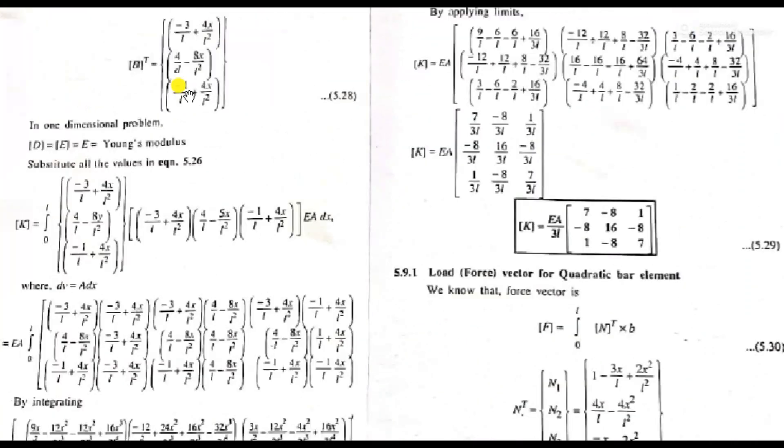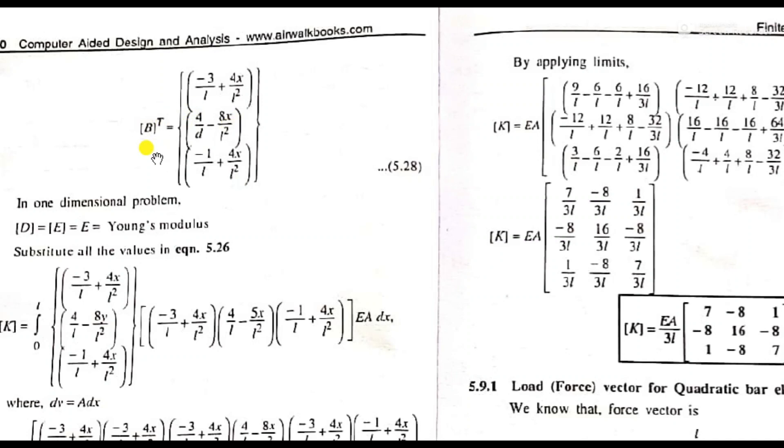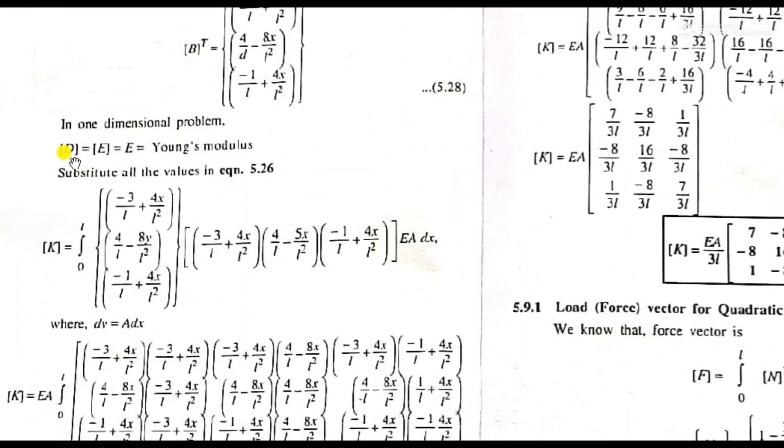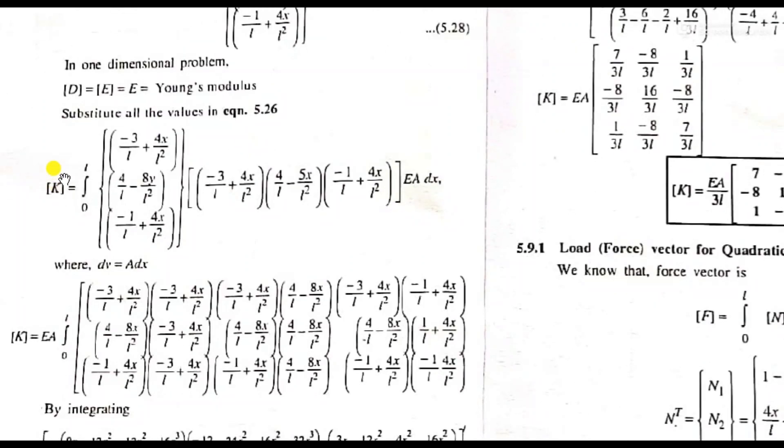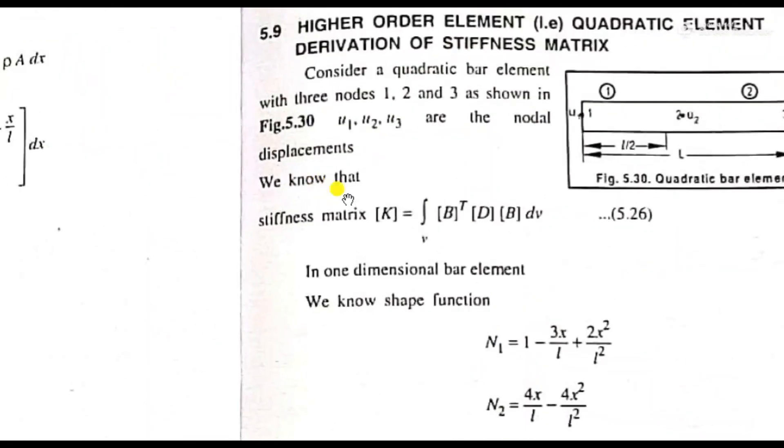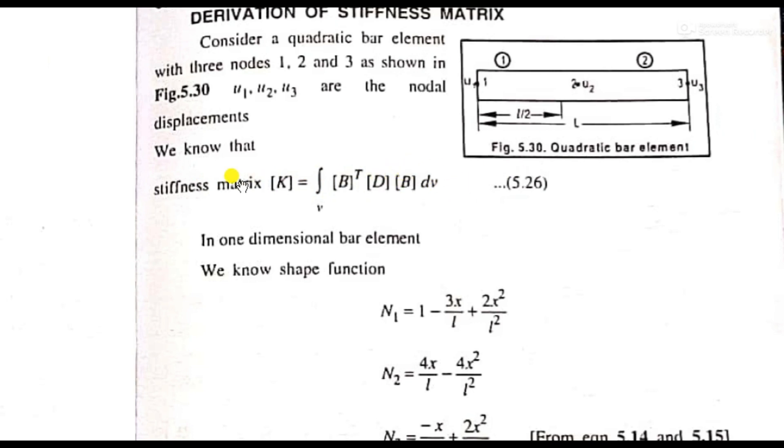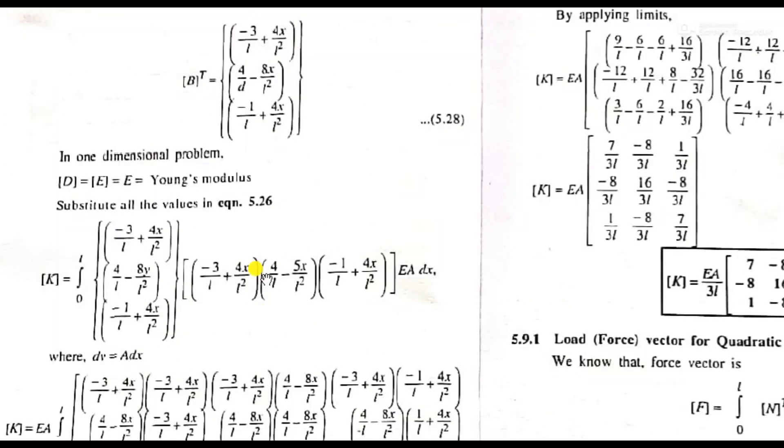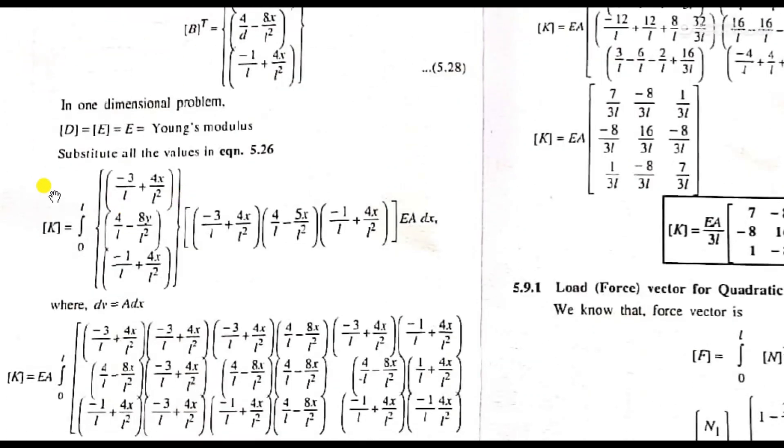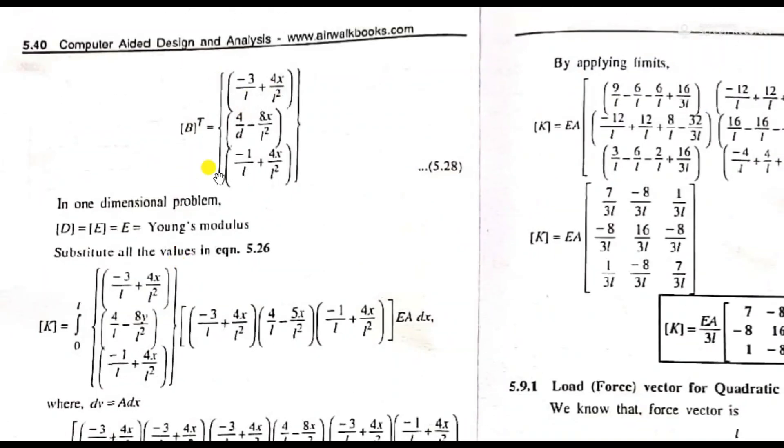Then we get B-transpose, which we call the row matrix. We substitute E as D, which is the Young's modulus. Then in the formulation, we substitute the equation. B-transpose times E times B times dV, where dV we will substitute. We use B-transpose here, so we substitute for the stiffness matrix calculation.